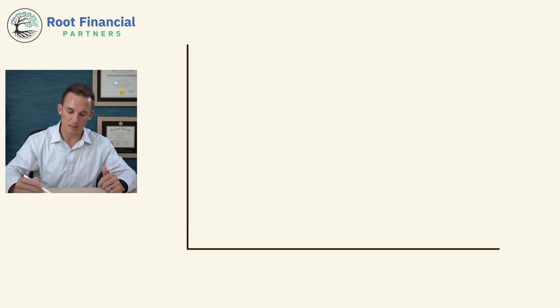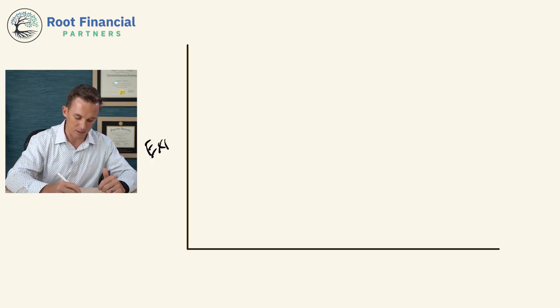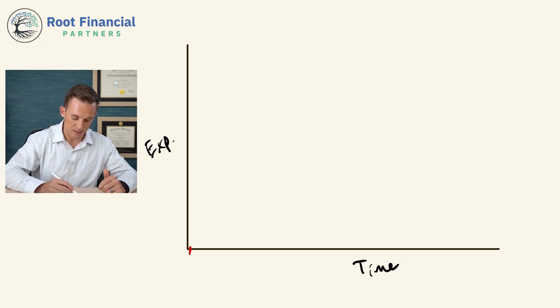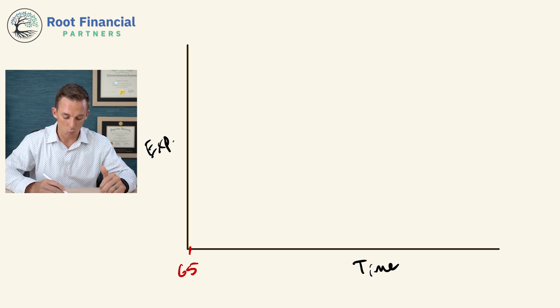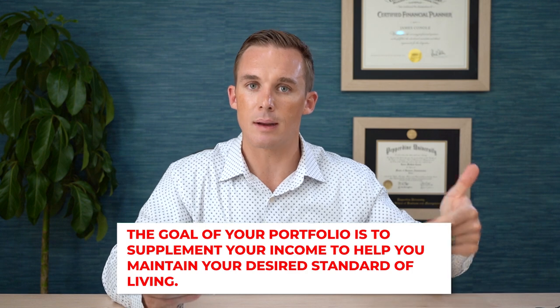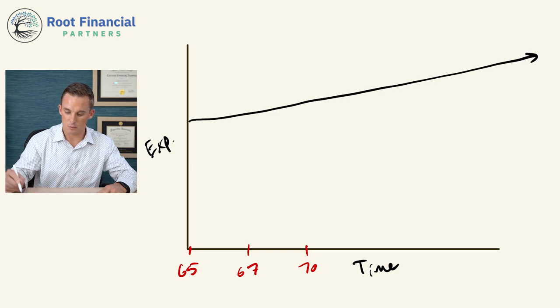Let's assume that you're retired. What you're going to be looking at here is this graph. On this graph, you have your expenses on one axis and time on the other. So if you retire at age 65, maybe you don't collect social security right away. Let's assume it's you and a spouse — one of you is going to collect at 67, and one of you is going to collect at age 70. Your portfolio's goal is to supplement your income to help you maintain your desired standard of living. So if we assume that your expenses are going up with inflation, we have to understand where does your portfolio fit in at different stages of your retirement.